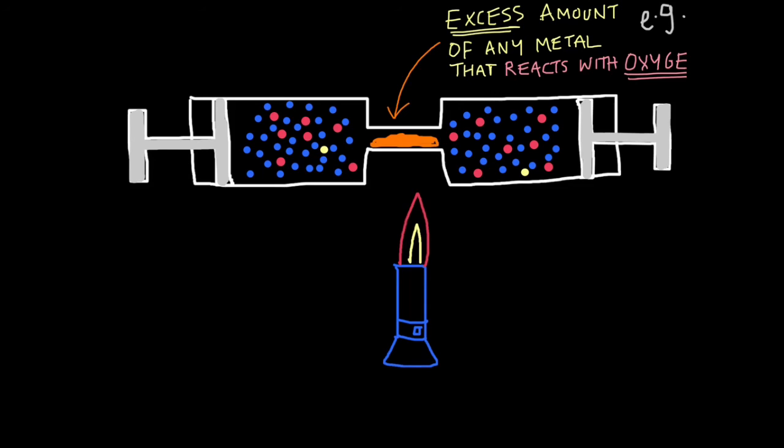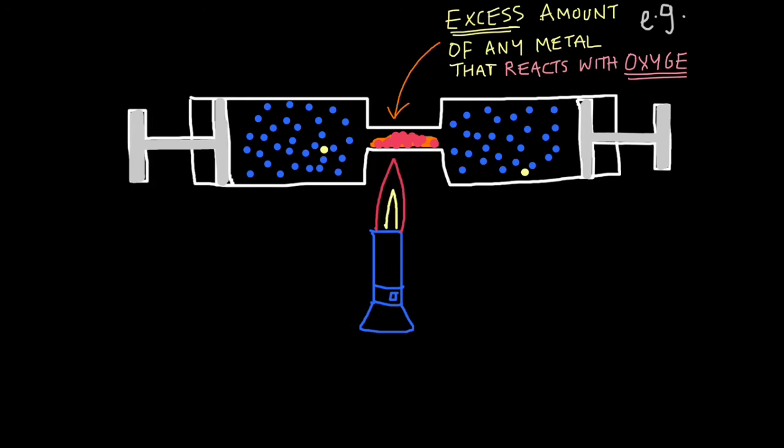Now all I have to do is gently heat the, let's assume it's copper, the copper in these test tubes. As I heat, the oxygen will start to react with the copper. What you can also do is move the plungers back and forth, back and forth, to swish the air over the copper to speed this up. So as I'm doing this, the oxygen reacts with the copper. Now hopefully you can understand why we use excess amount of metal, so that all the oxygen here does react.